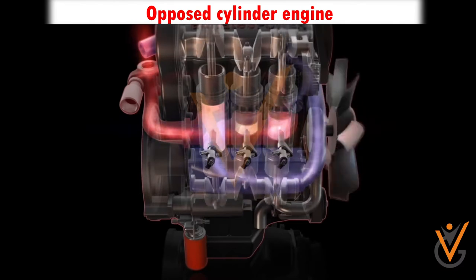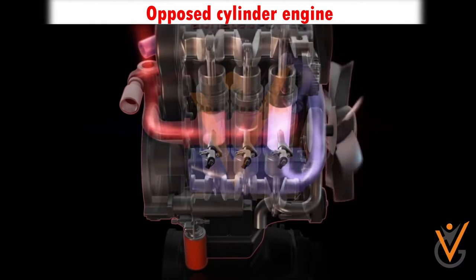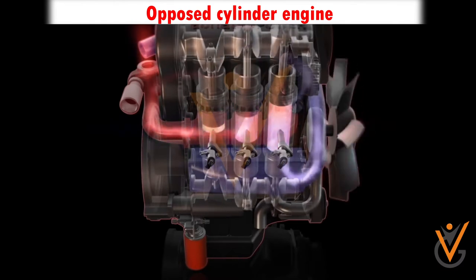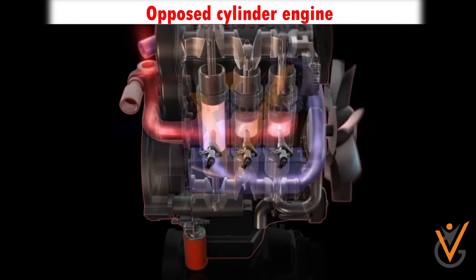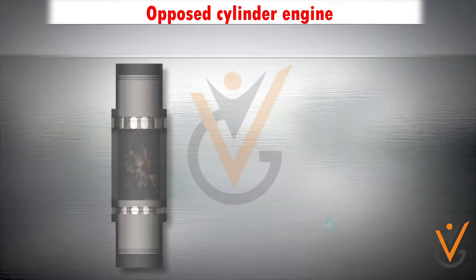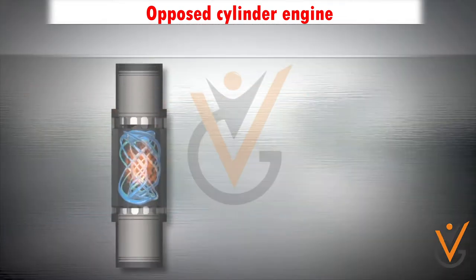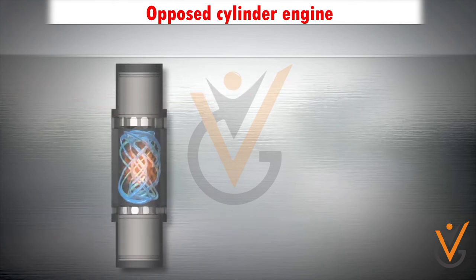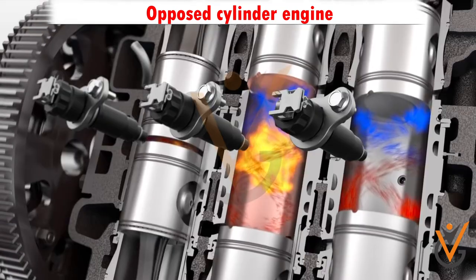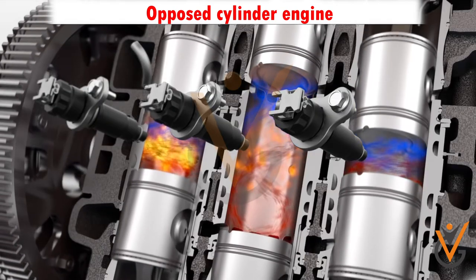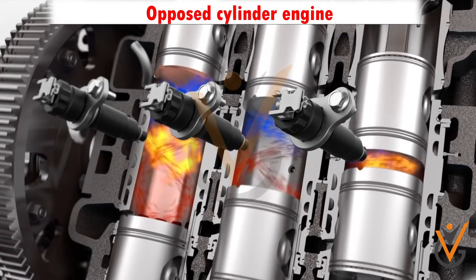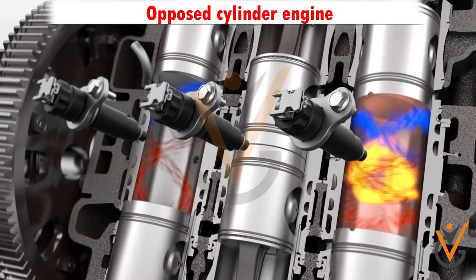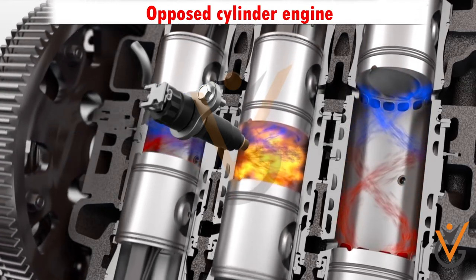In an opposed cylinder engine, the cylinders are placed opposite to each other. The piston and the connecting rod show identical movement. It runs smoothly and has better balancing. However, the size of the opposed cylinder engine increases because of its arrangement.